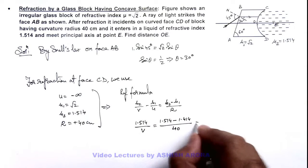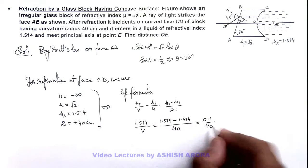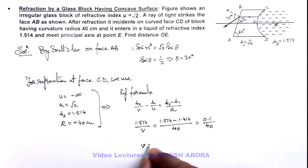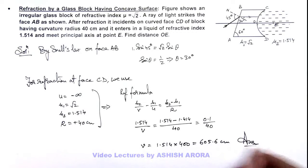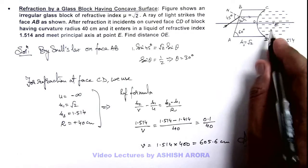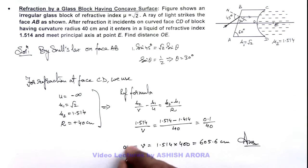And further simplifying, the value of v we are getting as 1.514 multiplied by 400, that is 605.6 centimeters. That will be the result of this problem. As this is the distance where the image is being produced, so this can be written as OE.